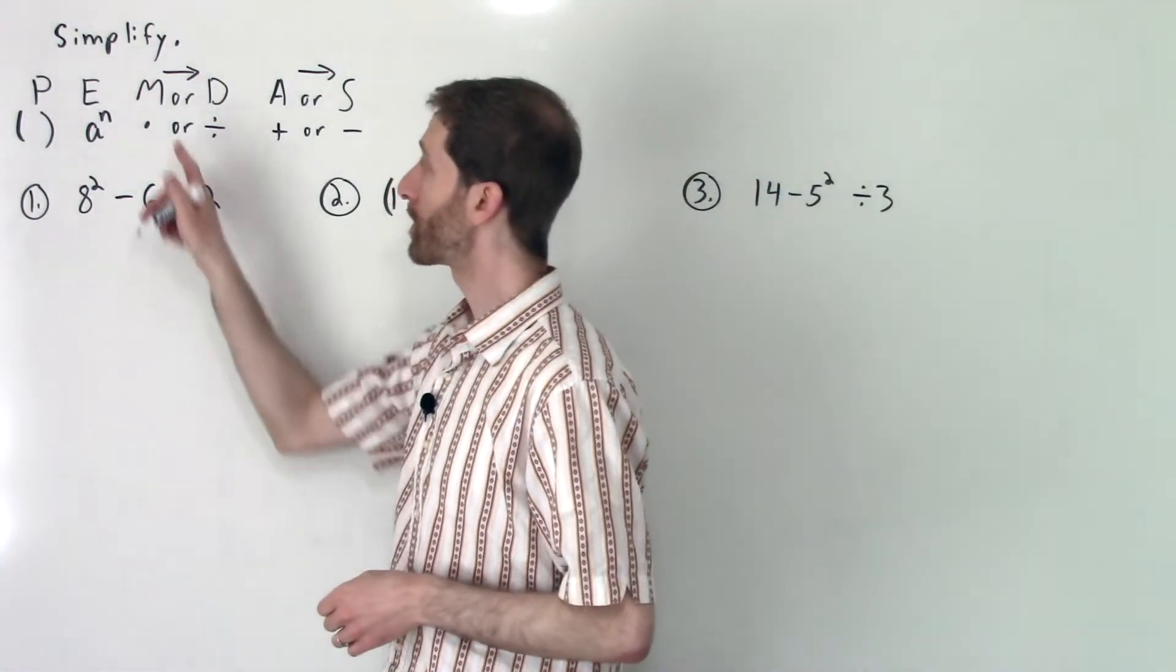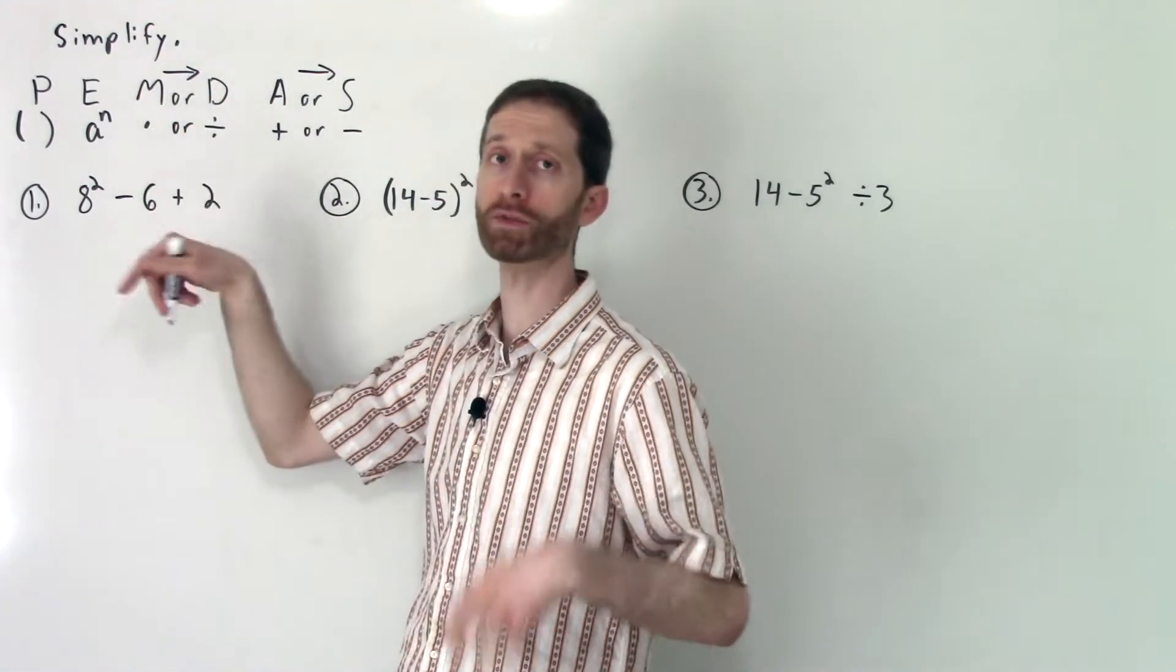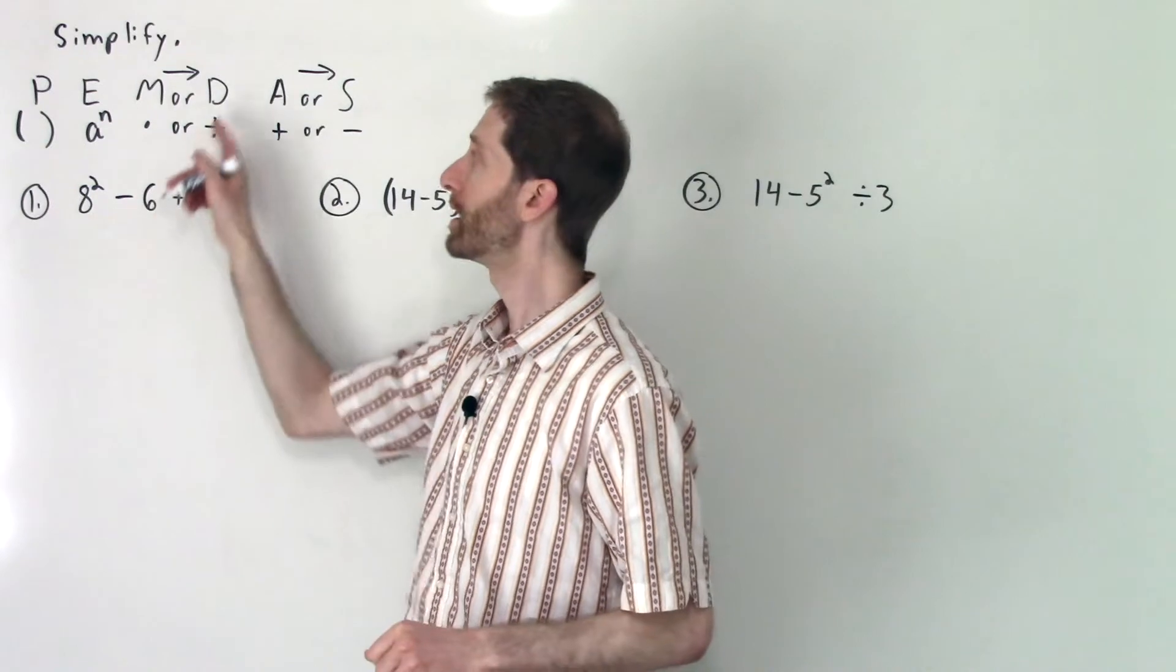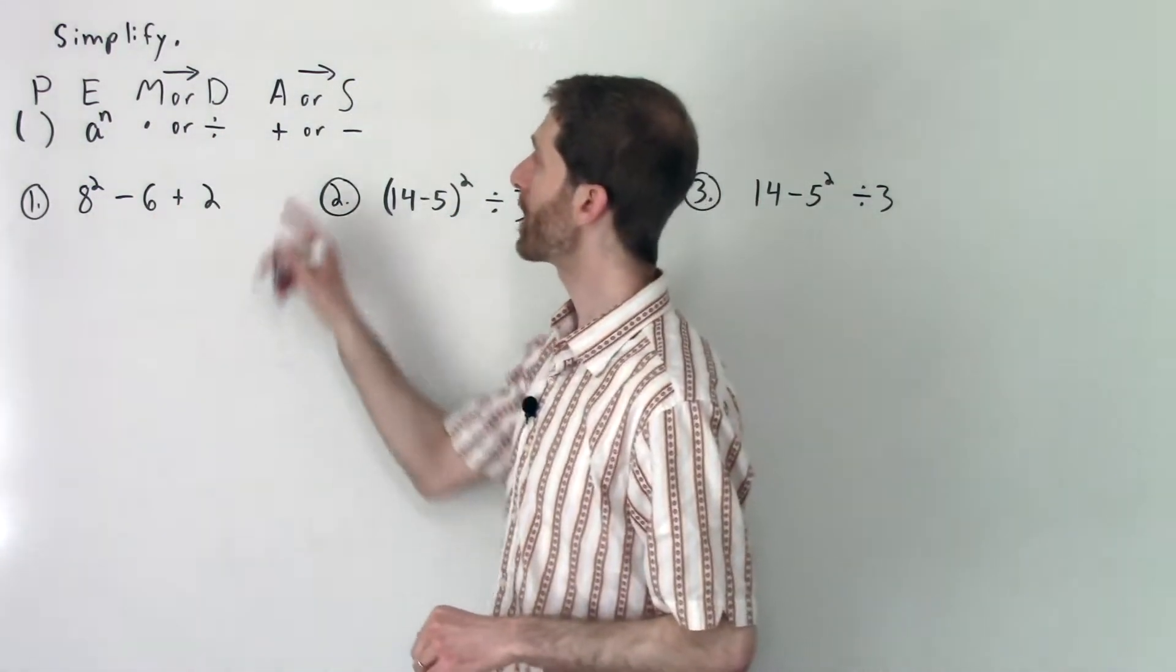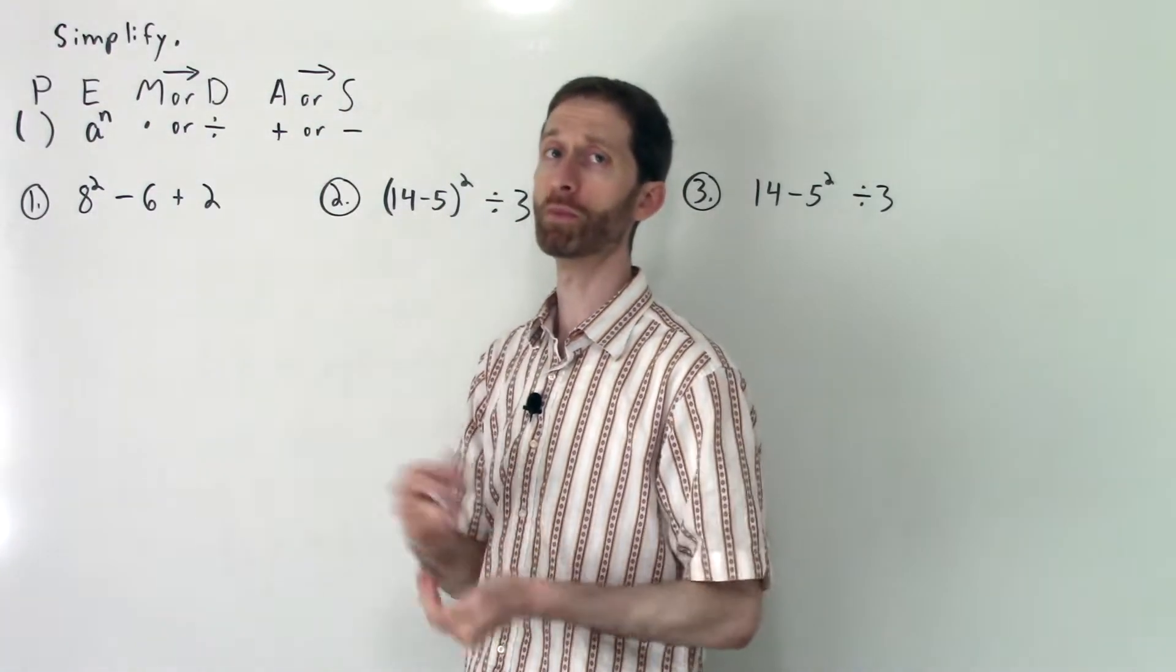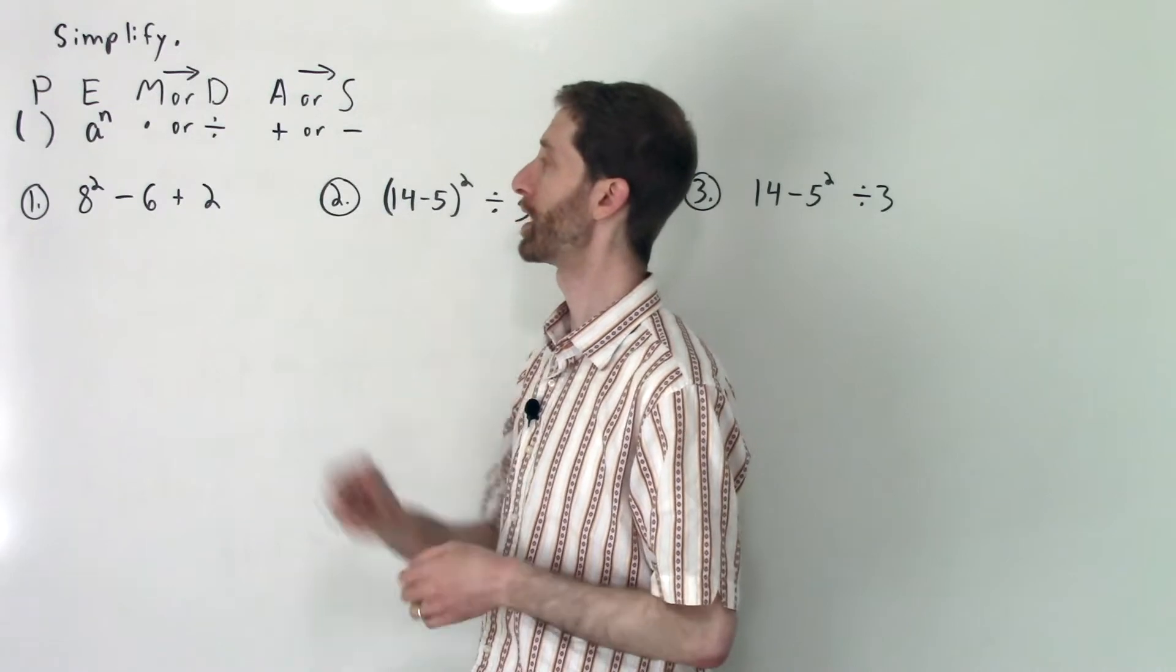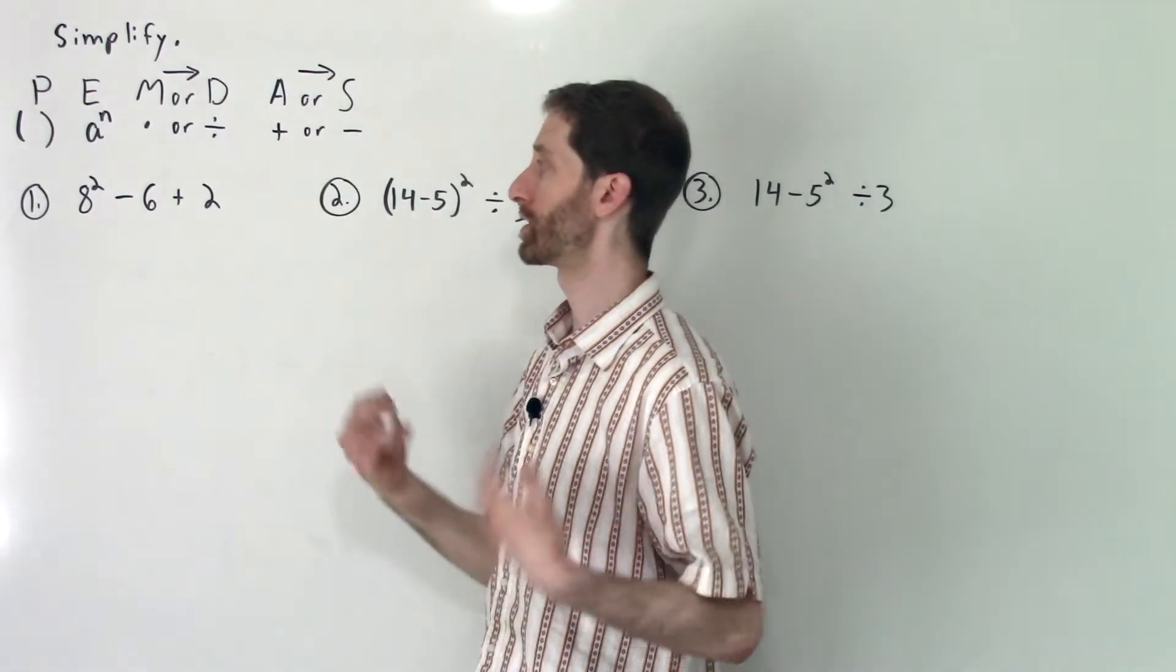Then after that we've got multiplication or division going left to right. So if multiplication comes first from left to right we do that. If division comes first we do that before multiplication. And then we have addition or subtraction going from left to right. Same rules as with multiplication or division.